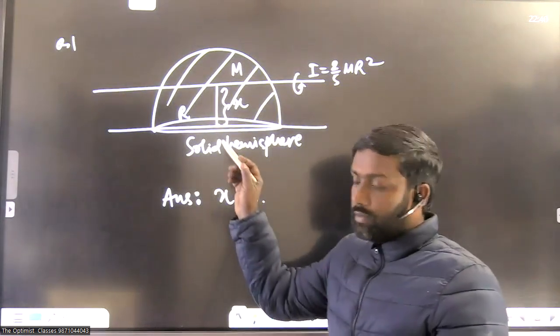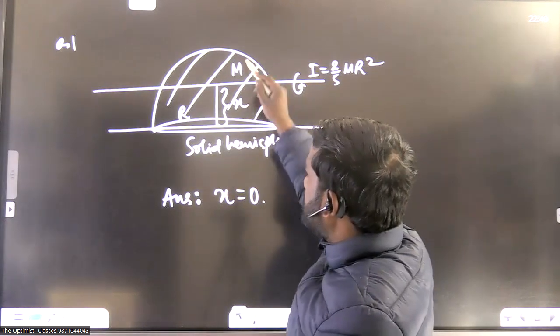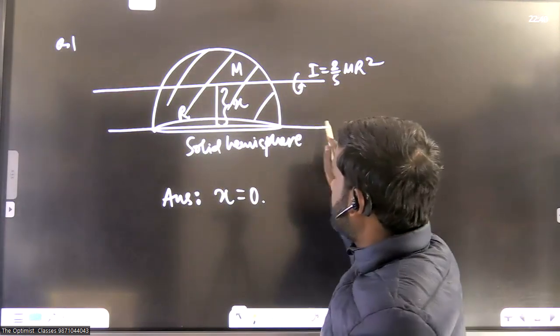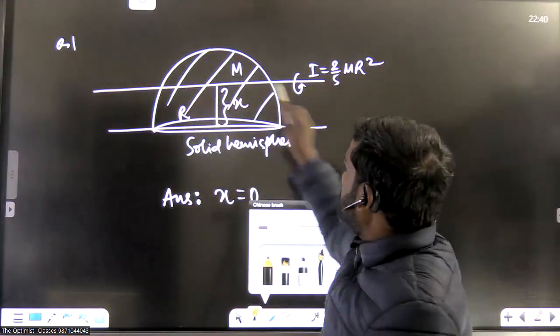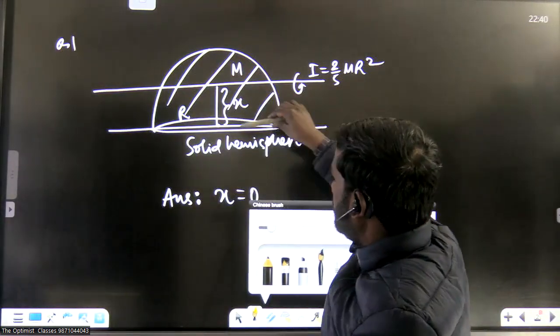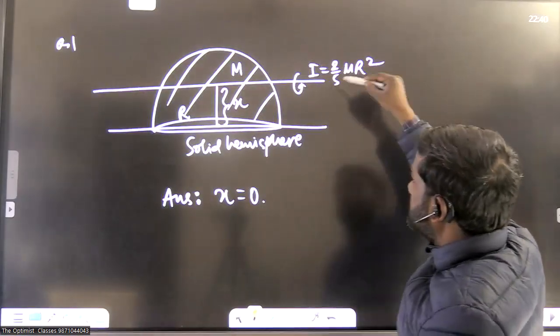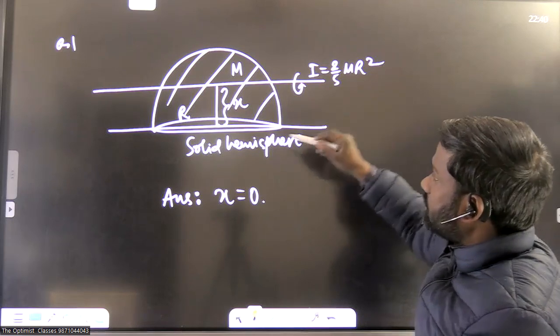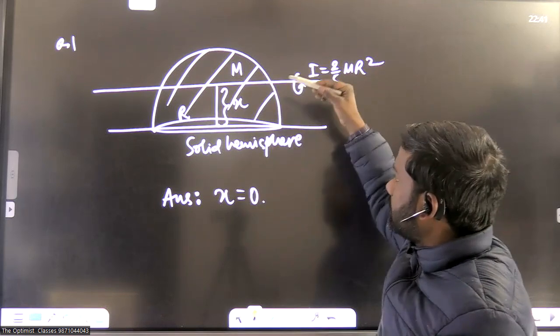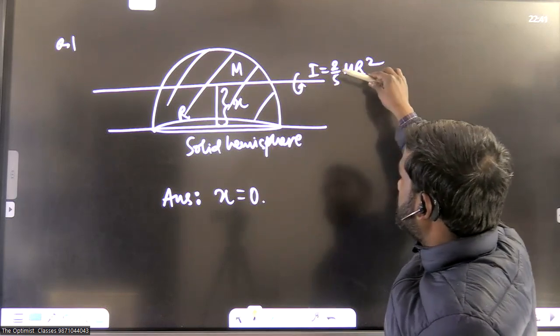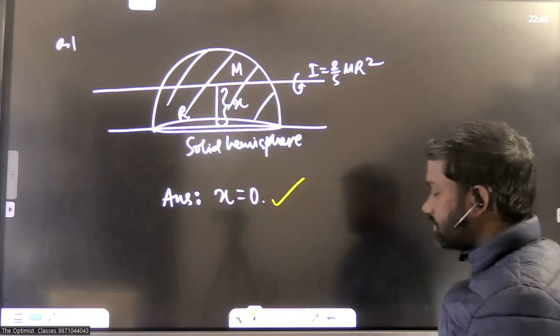This is a question on moment of inertia. This is a solid sphere with mass capital M and radius R. There is an axis passing through here at a distance X from base center. Question asks: if moment of inertia about this axis is 2/5 MR squared, then what's the value of X? In this case, value of X will be 0. Moment of inertia can be 2/5 MR squared if this axis is here only. So correct answer is 0 here.